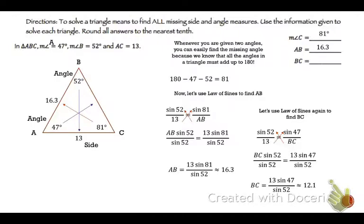You get BC equals 13 sin 47 divided by the sine of 52. Put it in your calculator. You get 12.1. So BC is 12.1. We found all the angles in the triangle. We found all of the sides. We are golden. We're good.